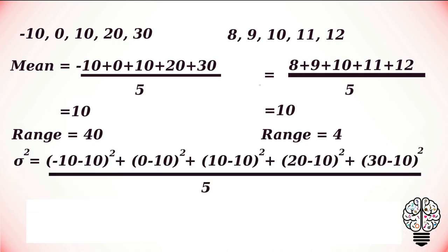Now let us take a look at variance. The symbol for variance is sigma squared. To calculate variance, we take each data point, find the difference between those data points and their mean, square them, and take the average of those squares. Our first data point from the first data set is -10, so we subtract the mean of 10 from it and square the result. We do likewise for the third, fourth, and fifth data points.